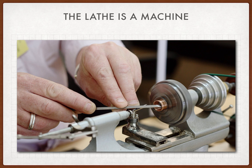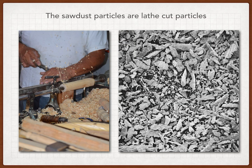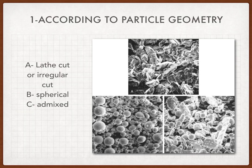The particles produced as waste from this cutting procedure on the rotating material in the lathe machine are irregular in shape, so we call them lathe cut particles. The lathe cut particles are particles that are cut by that machine, and the resulting particles are irregular in shape. It is now clear what is the meaning of the irregular geometry or the lathe cut particles geometry.